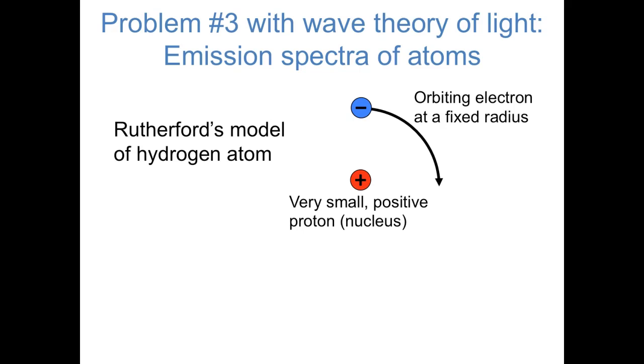At the time that quantum mechanics was developed, scientists more or less accepted Rutherford's model of the atom. You may remember from general chemistry that Rutherford showed in the gold foil experiment that an atom has a very dense, very small nucleus that's positively charged, which is surrounded by negatively charged electrons. So scientists saw atoms basically as tiny solar systems, with a very small, positively charged nucleus, and then an electron orbiting the nucleus at a fixed radius, the way that a planet does.